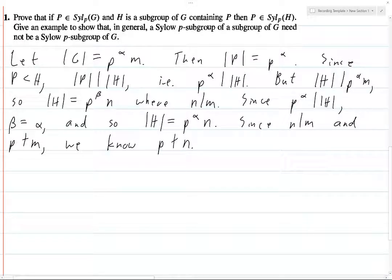And so then P is a subgroup of H, the order of H is equal to P to the alpha N, and the order of P is equal to P to the alpha, and P does not divide N. And so therefore, that's exactly what it means to be a P Sylow subgroup of H. So then P is in Sylow subgroup of H, and so here we go, that's that.